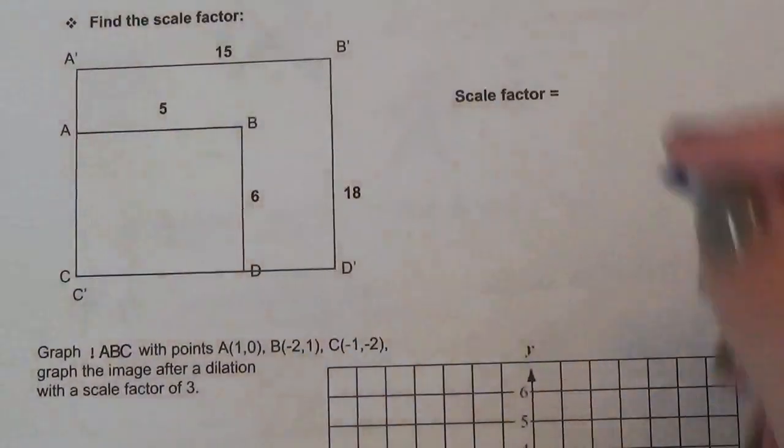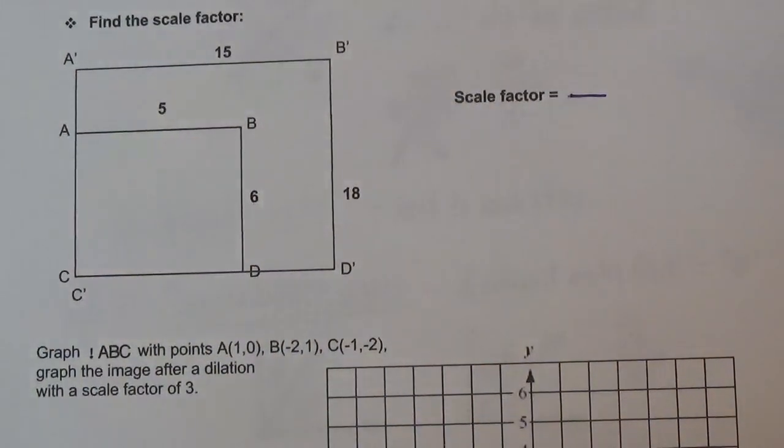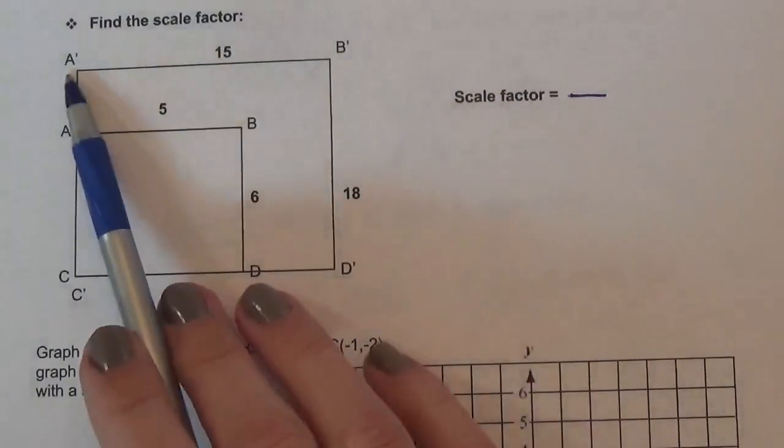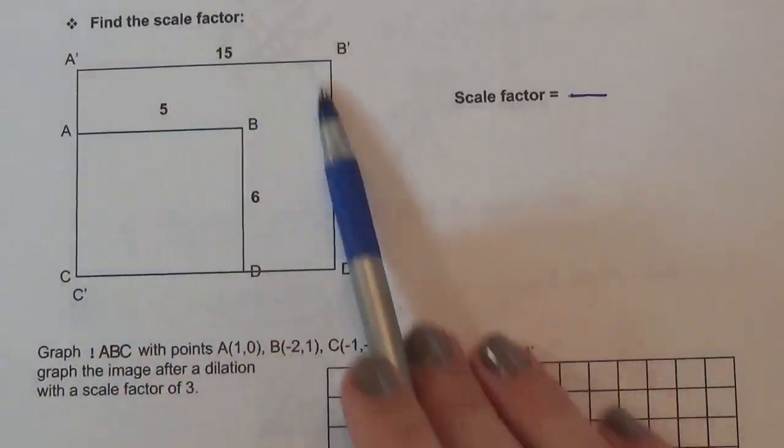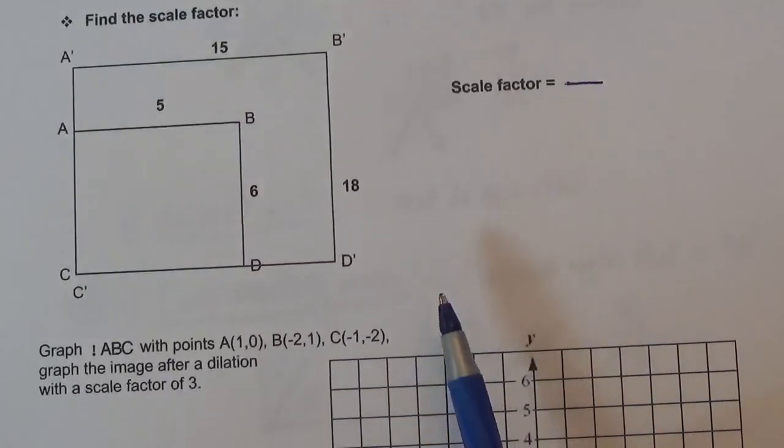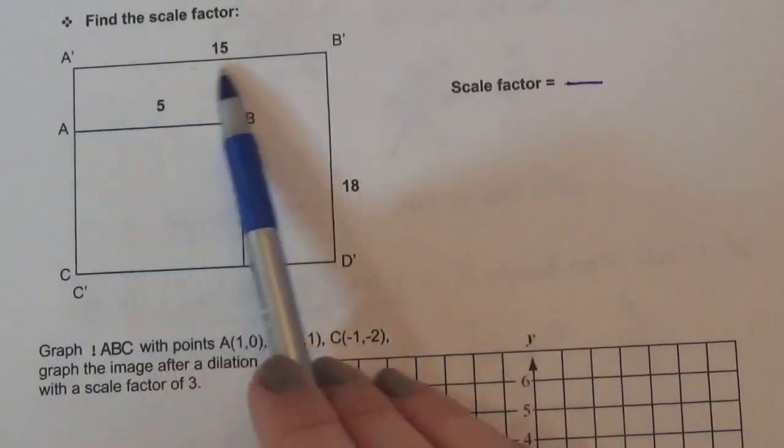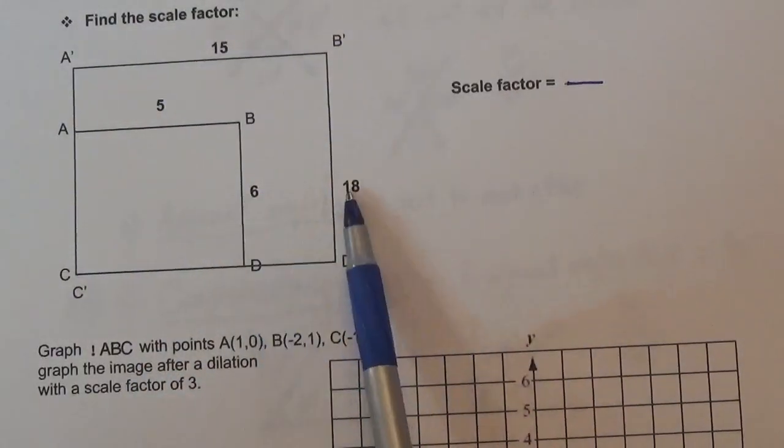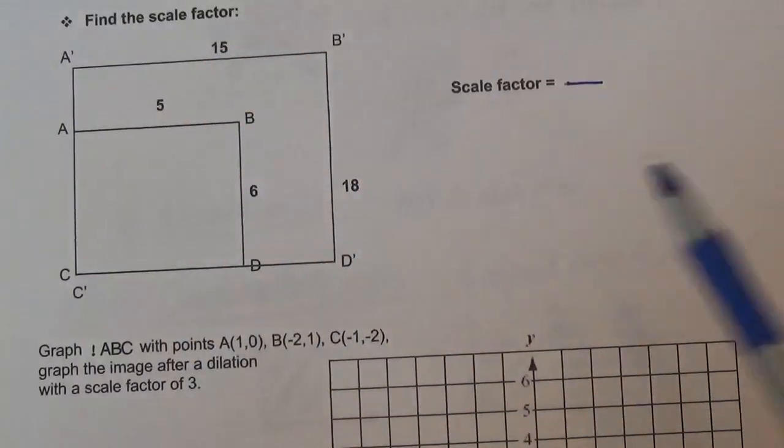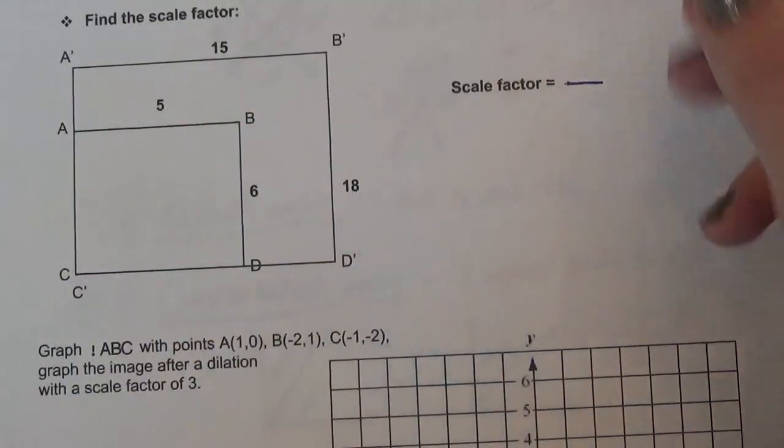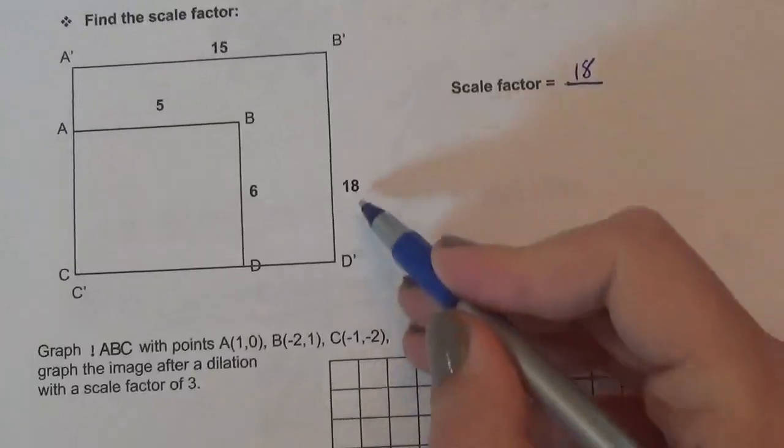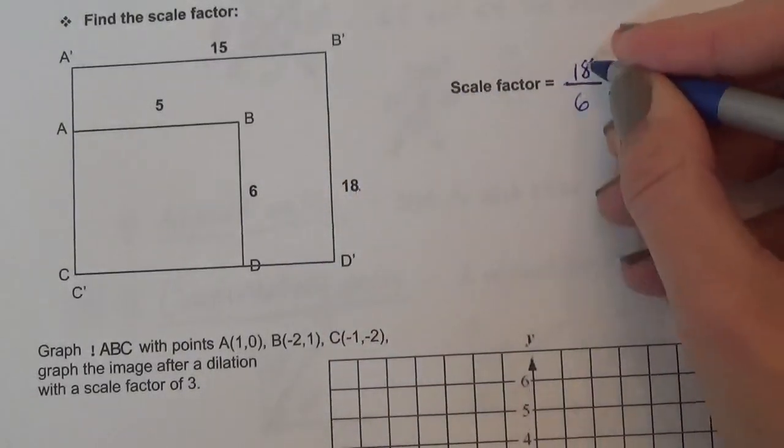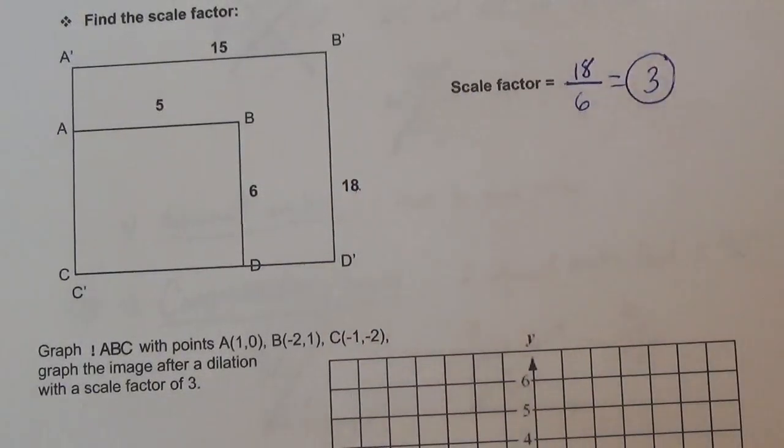What about the next one? We're going to go new to original. Which one's the new? This time the new is bigger. See the primes? So our answer better be bigger than 1. What numbers are they giving us? I guess we could use these two numbers or these two. I'll go here. So the new image is 15. The original was 5. 15 divided by 5, so it was a scale factor of 3.